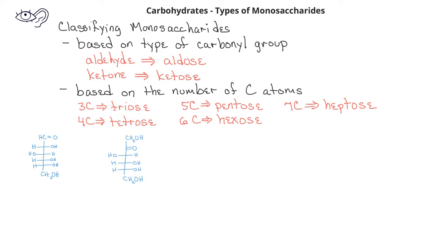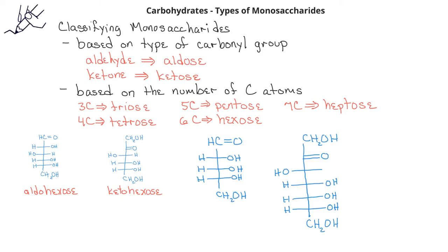Glucose, with an aldehyde functional group and six carbons, would be known as an aldohexose. Fructose, with six carbons and a ketone functional group, is identified as a ketohexose. These other two examples — you should be able to identify what types of monosaccharides they are. You should pause the video and identify the type of functional group and the number of carbons, and then write which type of monosaccharides they would be.